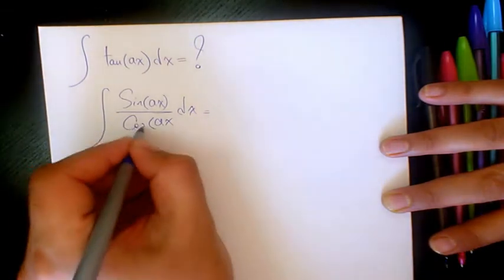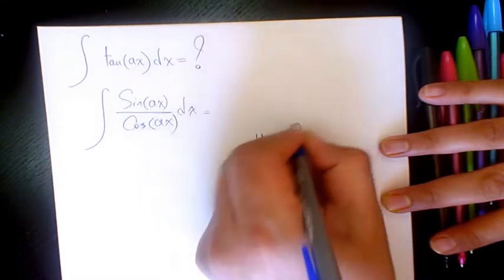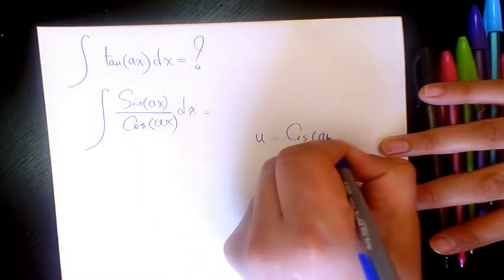And then what I can do, since in the denominator I have cosine ax, I'm going to have u equals to cosine a times x.